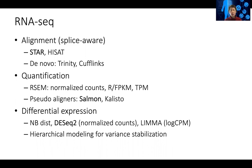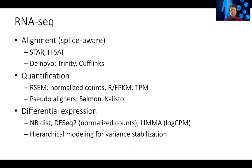There are also de novo RNA assembly algorithms that don't require a reference genome. For example, if you found some new organism and know it has DNA, you could sequence its RNA and use Trinity and Cufflinks to assemble the RNA transcripts and get abundance estimates. For this course, however, we focus on the basics and just use STAR for alignment.